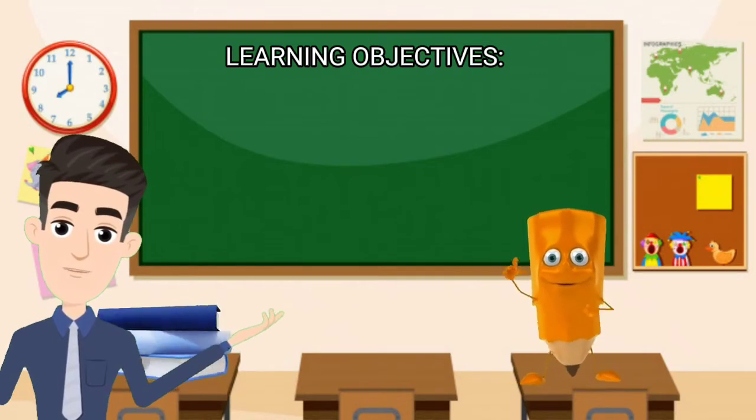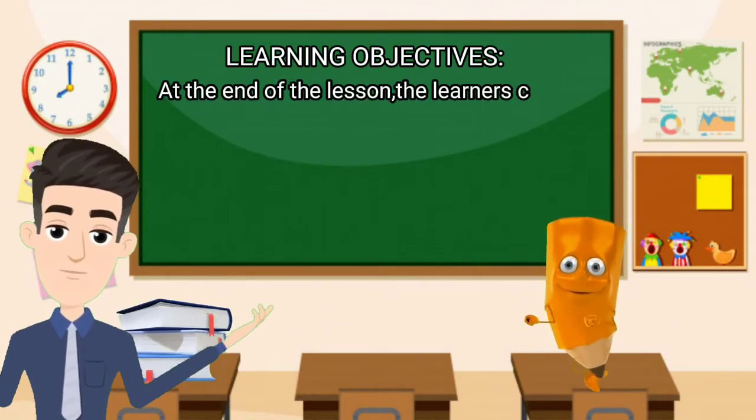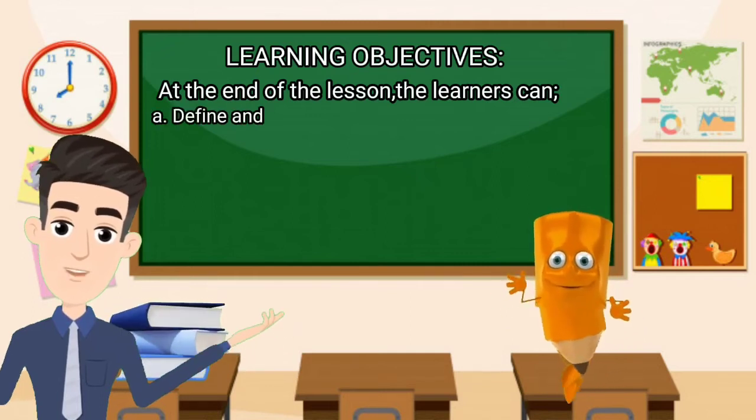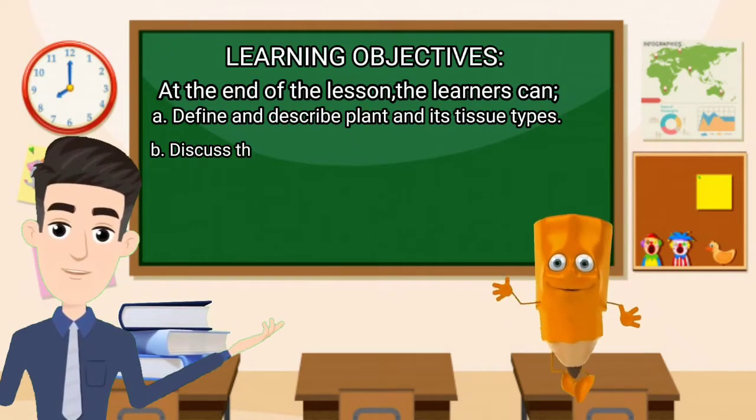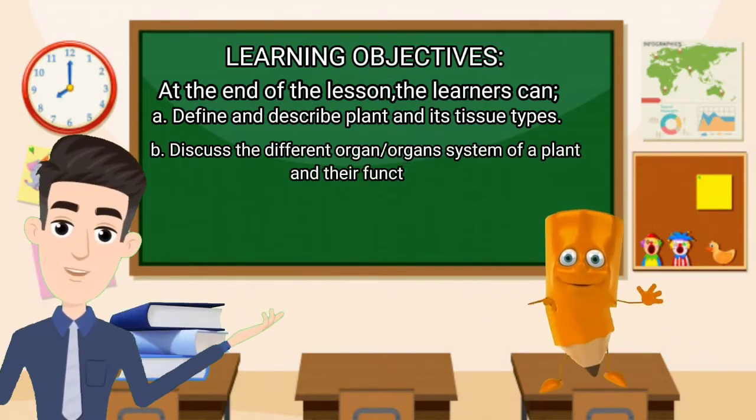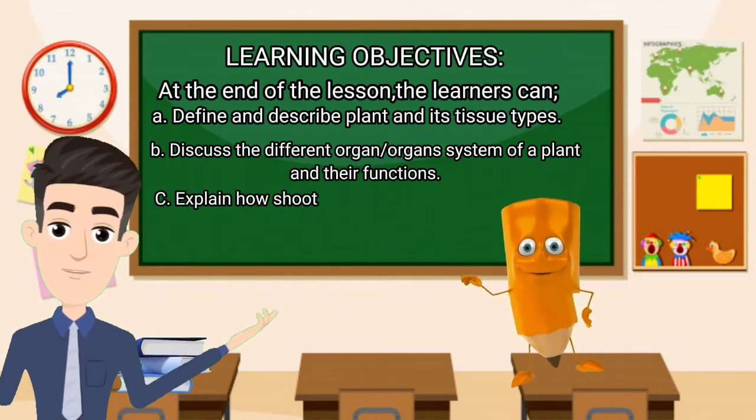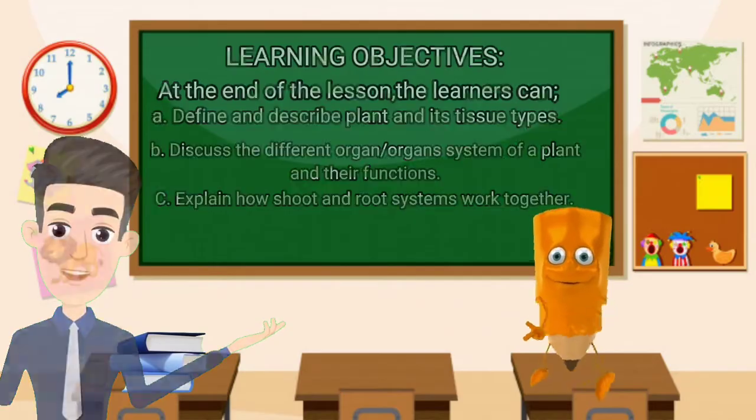Before we proceed to our discussion, we have here the following objectives. At the end of the lesson, you as a learner can define and describe a plant and its tissue types, discuss the different organs and organ systems of the plant with their functions, and lastly explain how shoot and root systems work together.